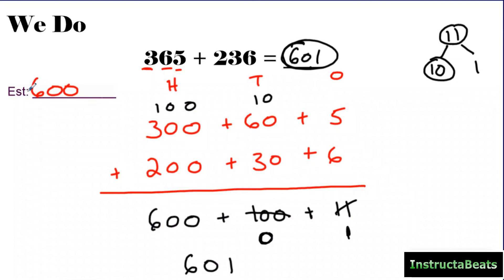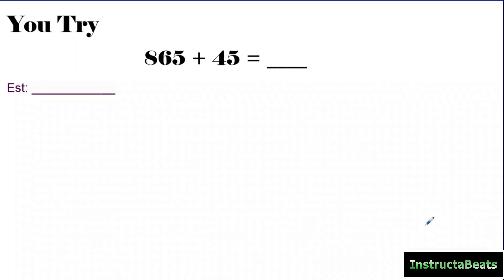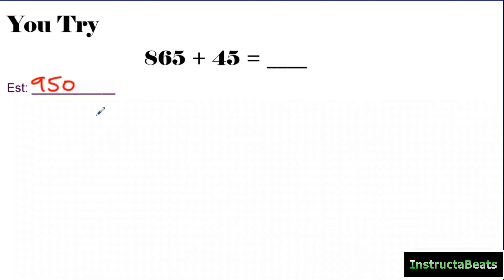Let's do a U-try problem together to practice this skill. If you already tried this one by yourself, go ahead and push pause, solve it, and then push play to check your work. Don't forget to estimate first. Growth mindset — it's okay to fail as long as you learn from it. Hopefully you just paused it and tried it. So first thing I'm going to estimate: 865 is going to round to 900, and 45 is going to round to 50. So I think my answer should be somewhere around 950. Your estimate is just to help you figure out if your answer is reasonable.